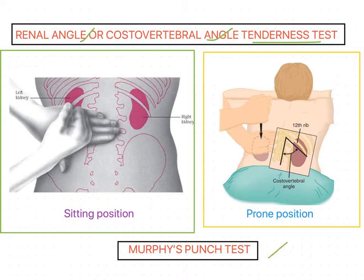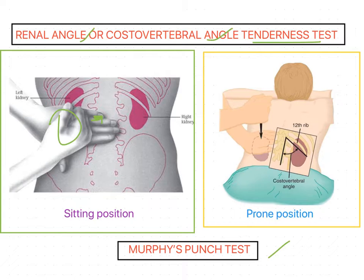This test is also called the Murphy's punch test. John Benjamin Murphy was an American surgeon who performed this test for the first time in 1884. This test is performed by the examiner striking the fist of one hand against the dorsal surface of the other hand, which is placed flat over the region of the renal angle, with the patient in sitting or prone position.